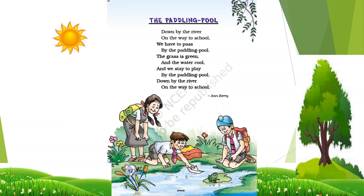Why have they called the pool a paddling pool? Because the pool is very shallow, in which the children can walk in. The grass is green and the water cool, and we stay to play by the paddling pool. There, the grass is green in colour and the water of the pool is cool. The children like to play near to the pool.